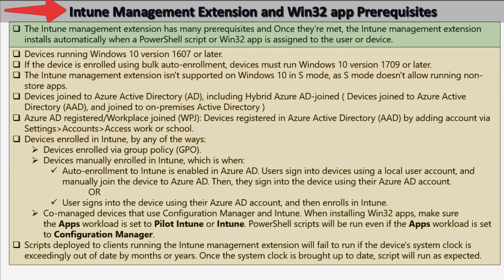Now let's talk about Intune Management Extension and Win32 app prerequisites. The Intune Management Extension installs automatically when prerequisites are met. The device must be running Windows 10 version 1607 or later; if enrolled using bulk auto enrollment, it must run Windows 10 version 1709 or later. The Intune Management Extension is not supported on Windows 10 in S mode, because S mode does not allow running non-store apps.